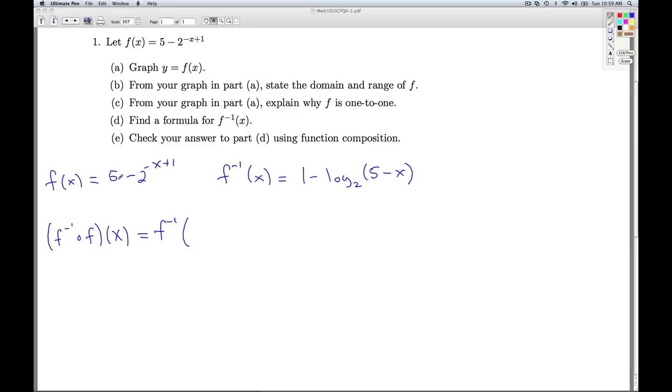I want f inverse of f of x. So that's f inverse of 5 minus 2 to the minus x plus 1. Alright, so that means everywhere I see an x in my formula for the inverse, which is only at one place, I have to replace it with that expression. So anytime you replace things in algebra, it's best to do it using parentheses so you're going to avoid some common mistakes. So I want 1 minus log base 2 of 5 minus this thing. So it's 1 minus log base 2 of... 5 minus 5 is 0, and then distributing that negative through makes that a positive 2 to the minus x plus 1.